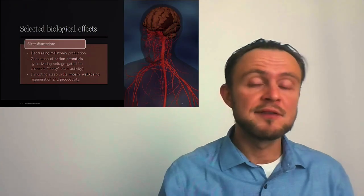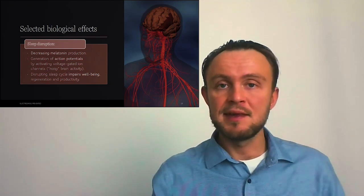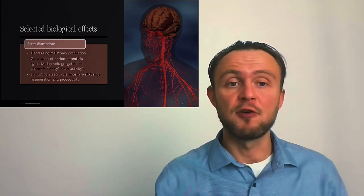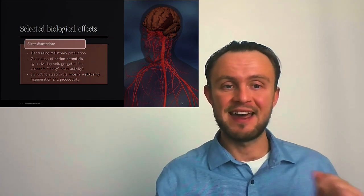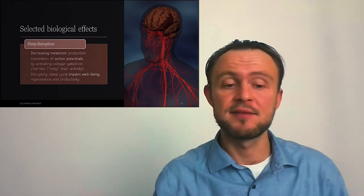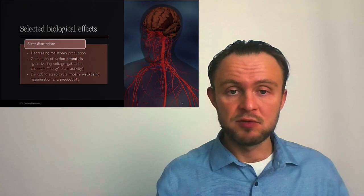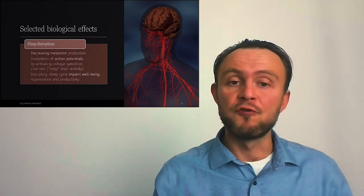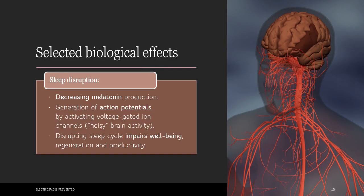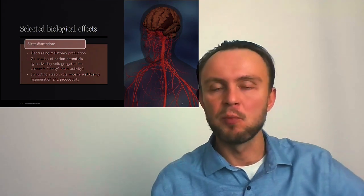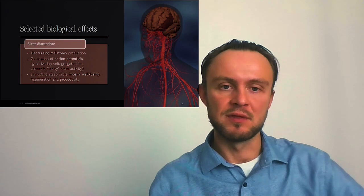These adverse health effects usually take some time to develop, but we can see some adverse health effects much faster. This would be case of sleep disruption because electromagnetic fields can effectively decrease melatonin production. Melatonin is a very important hormone that helps our body to regenerate. Electromagnetic fields can also increase neural activity by increasing occurrence of action potentials by activating voltage-gating ion channels. Basically, they are generating noisy brain activity, so our brain is more active than it should be during the sleep. So electromagnetic fields will intersect with sleeping both on hormonal and also on neurological level.